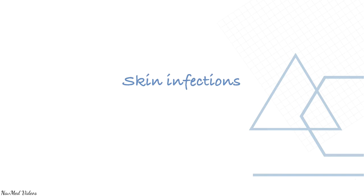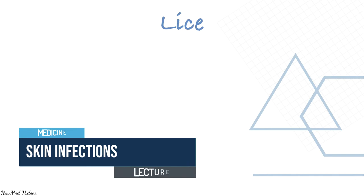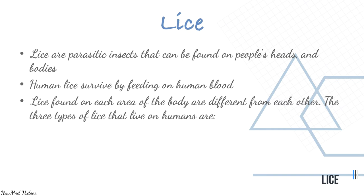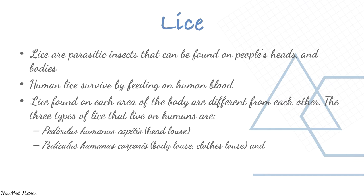Hello everyone, welcome to another lecture. We're going to look at skin infections today. Let's start with lice. Lice are parasitic insects that can be found in people's heads and bodies. Human lice survive by feeding on human blood. The three types of lice that live on humans are Pediculus humanus capitis (head louse), Pediculus humanus corporis (body louse), and Phthirus pubis (crab louse).